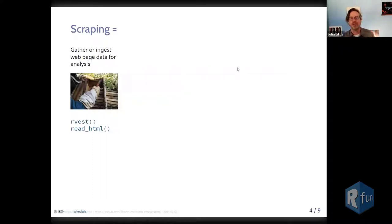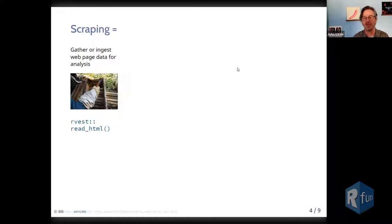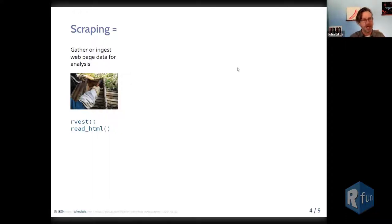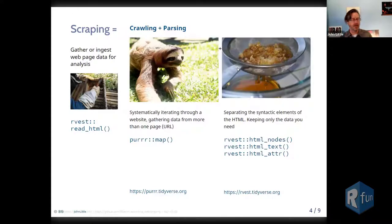Let's introduce the topic of web scraping — generally speaking, gathering or ingesting web pages for some kind of analysis. The easiest tool to use is Rvest's read_html function, which basically does the same thing as clicking on a link or putting a URL into a web browser — it pulls down all the HTML. Outside of a web browser you get the raw HTML, and we want to be able to identify which parts of that HTML structure contain the information we want.